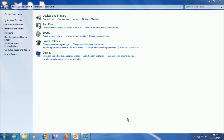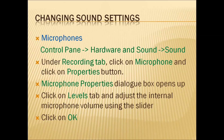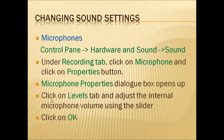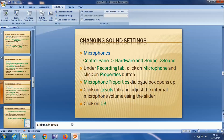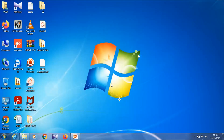Now we will see how to change the sound settings for microphones connected to the computer. Go to control panel, then 'Hardware and Sound', then go to Sound. Under the Recording tab, click on Microphone and click on the Properties button. The Microphone Properties dialog box will open. Click on the Levels tab, make the changes, and then click OK to save all the changes.